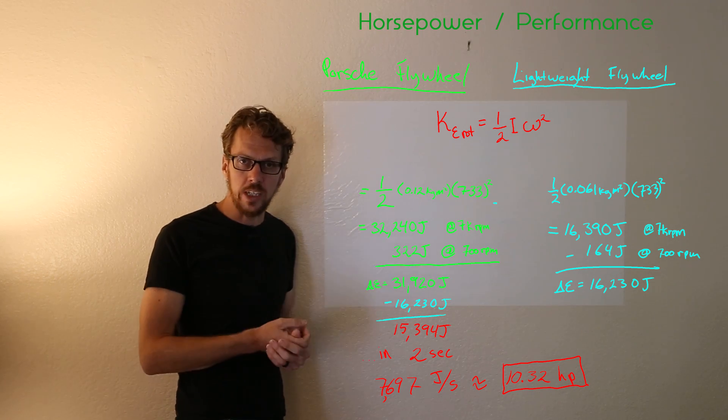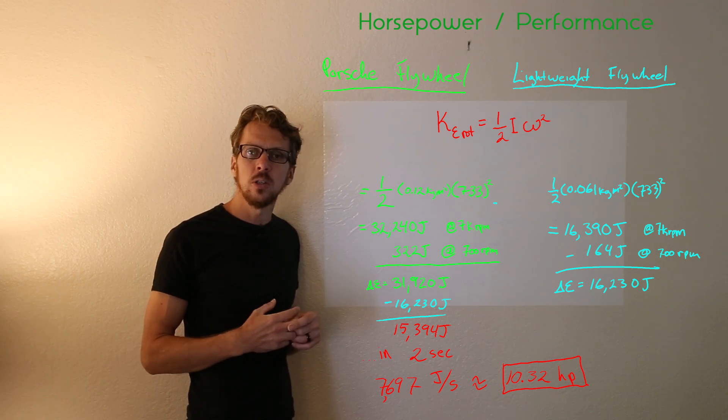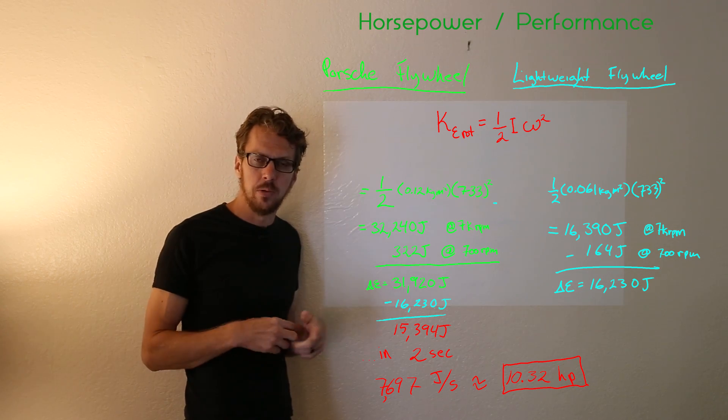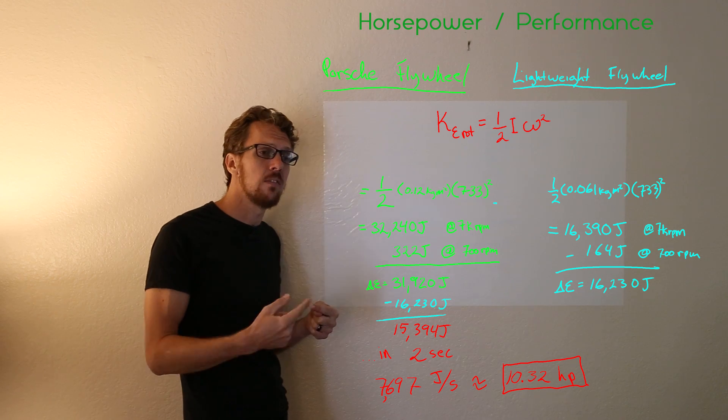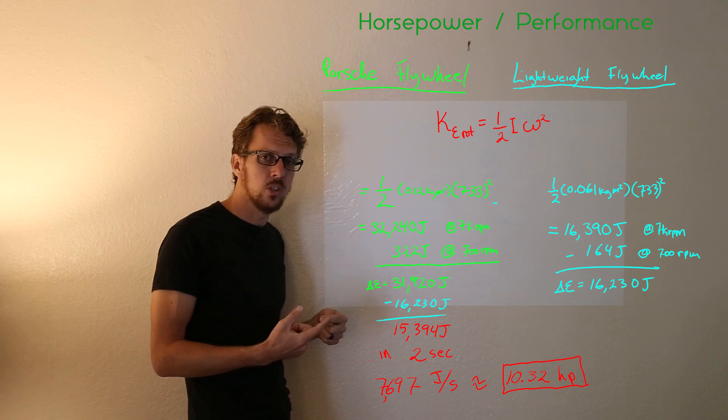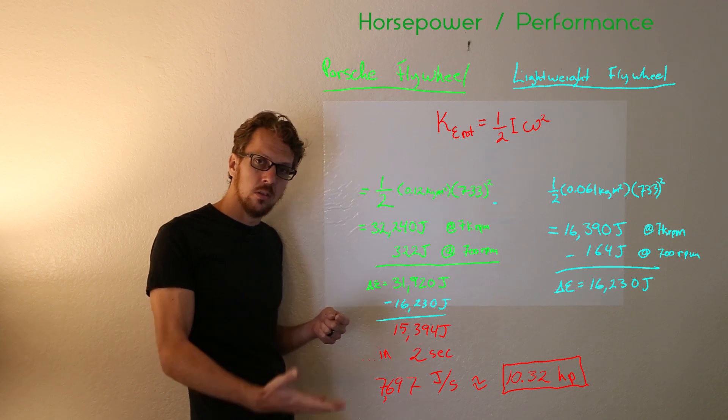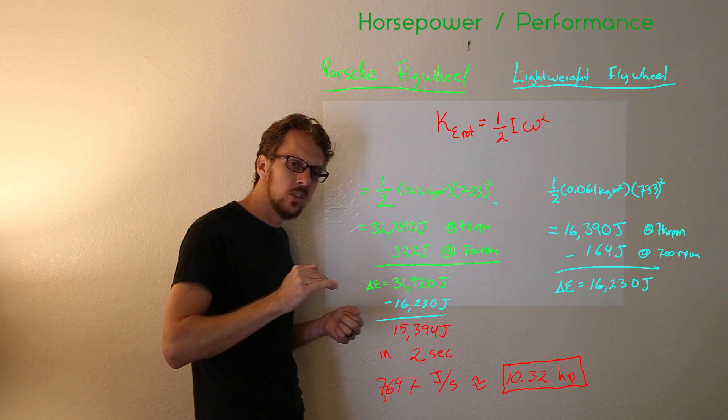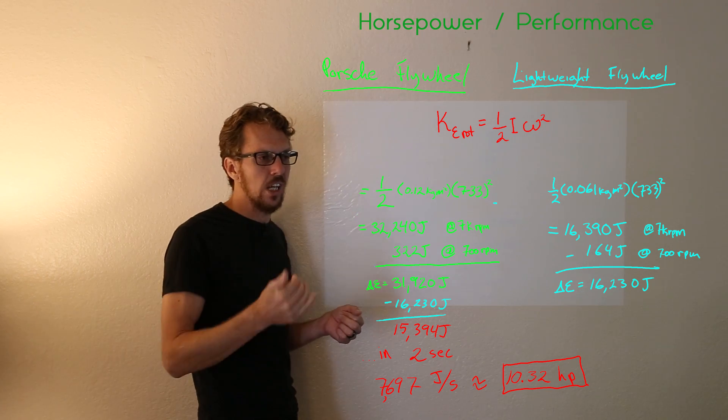All right great. Now to figure out what that might mean as far as horsepower we've got to figure out the time in which it spins up. If you spin up your engine from idle to 7000 RPM very slowly the horsepower is not that significant. If you do it faster it takes more horsepower.